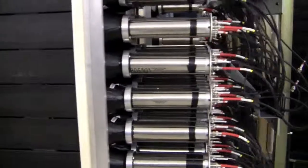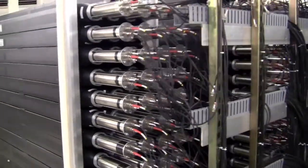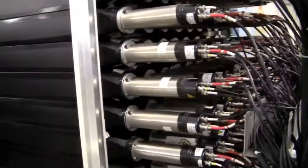Each detector module has two photomultiplier tubes, one at each end, and each photomultiplier tube has three cables coming out of it: two signal cables and one high voltage cable. So if you were to take all of the cables from MONA LISA and line them up end to end, it would stretch for 12 miles.